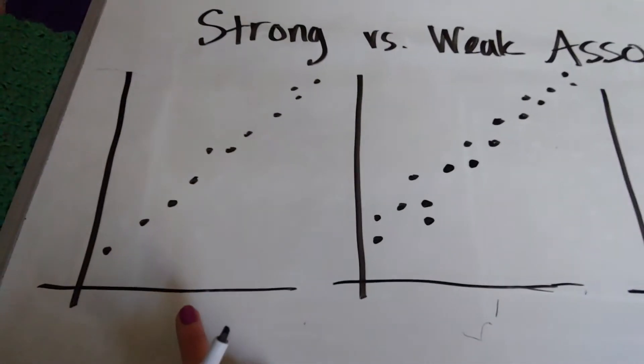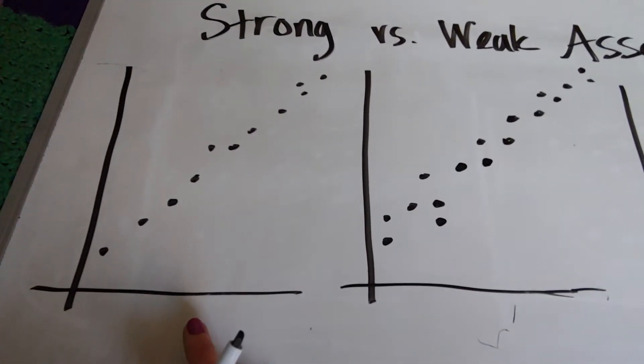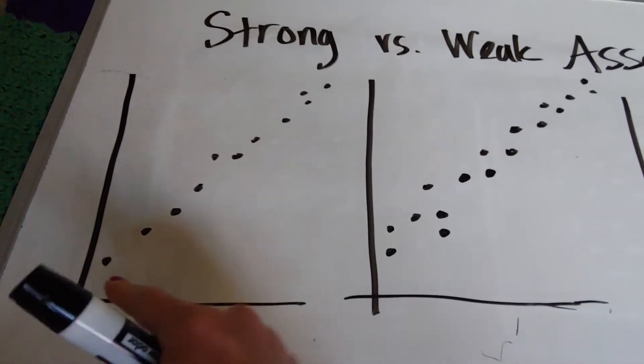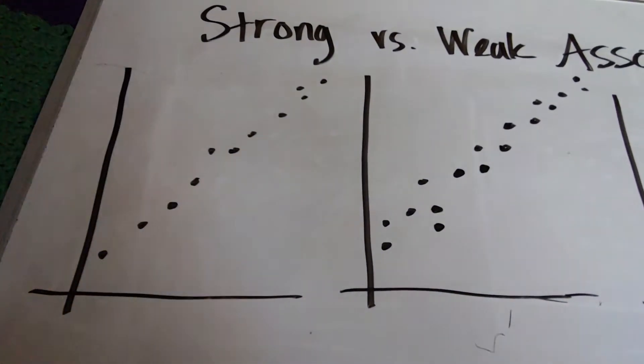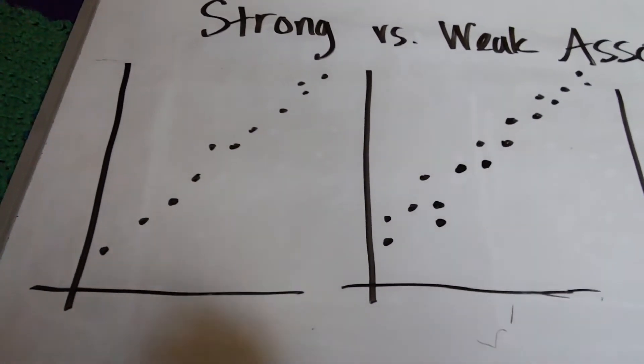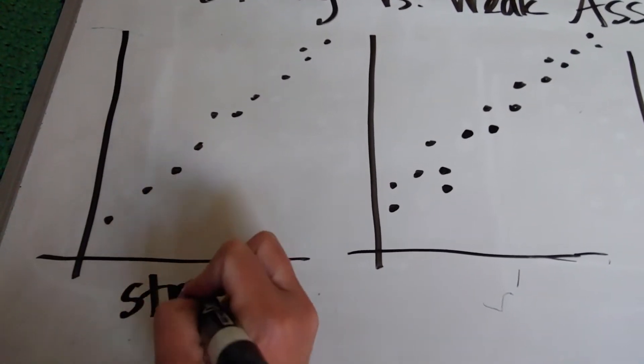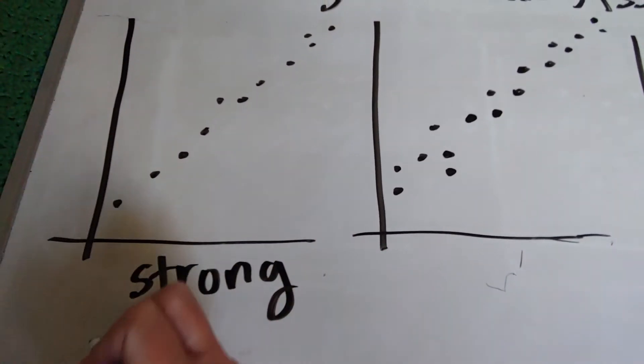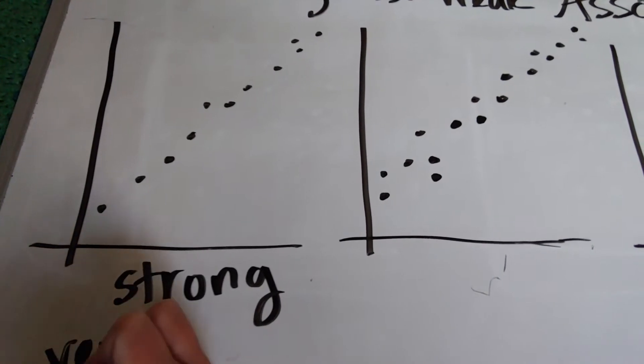So if I look at this first one, and I know some of you are thinking in algebra classes, like these dots do not perfectly line up. True, but here as far as data points are concerned, this is considered to be strong. And in fact, I would probably even put the word very with it.